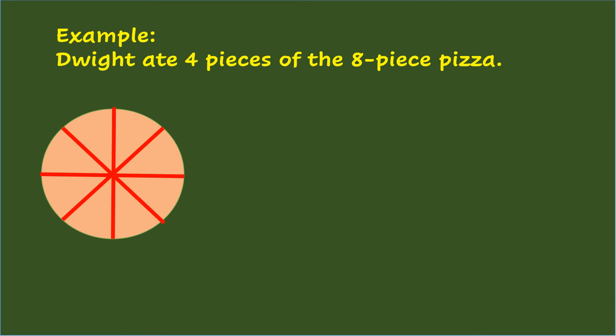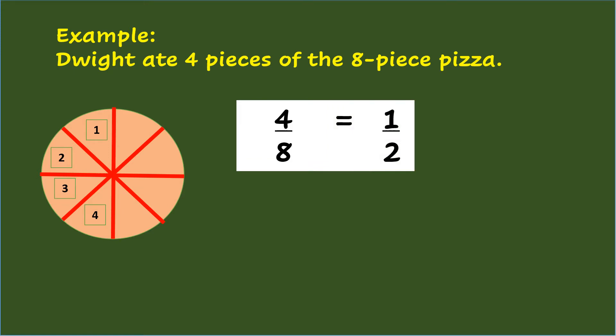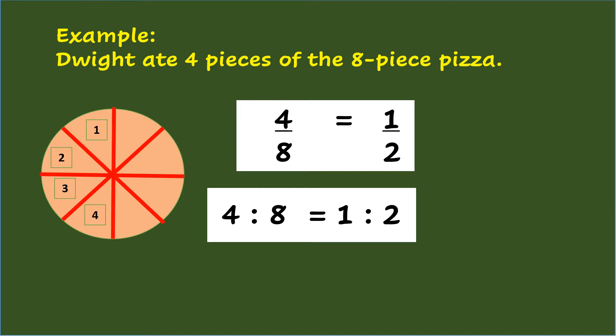Example: Dwight ate 4 pieces of the 8-piece pizza. The ratio of pizza eaten by Dwight to the total pieces can be written in fraction form as 4/8, which simplifies to 1/2. In colon form, the ratio can be written as 4 is to 8, which simplifies to 1 is to 2.